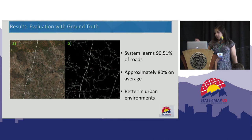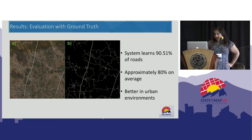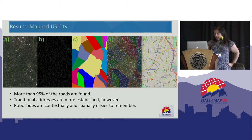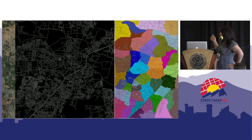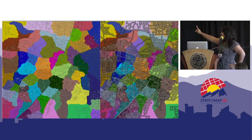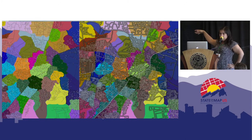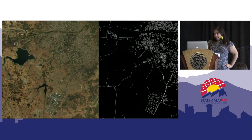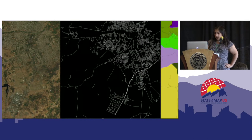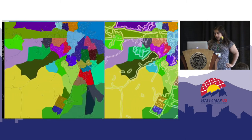We have results compared against ground truth. Most of the time, the system learns approximately 80% of the roads, and it performs better in urban and more structured environments. These are more results from our approach: satellite imagery, roads, regions, and the actual addresses — showing the distance fields you fall into. This improves coverage up to 80%, processed more than 200 districts, and we saw that regions follow natural boundaries.